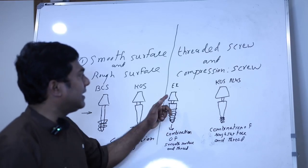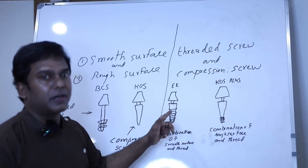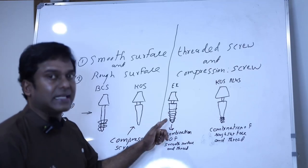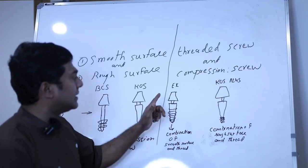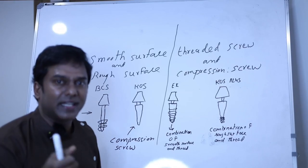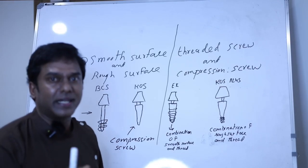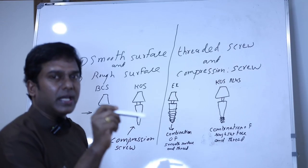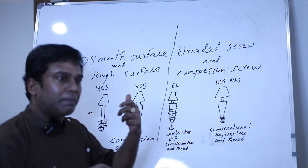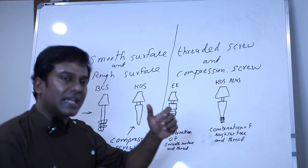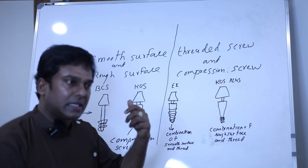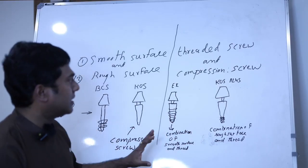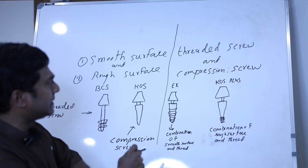The EX design is ideal for the tuberosity region where you have a lot of soft bone. Please remember that the EX design has self-threading screws — even when you make a small osteotomy hole in the cortex, the path of the implant can be created by just clockwise rotation of the implant.